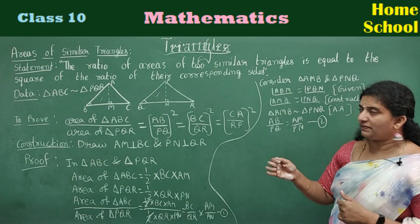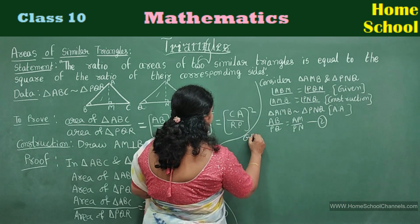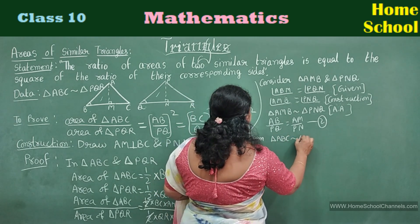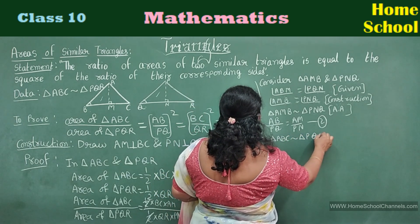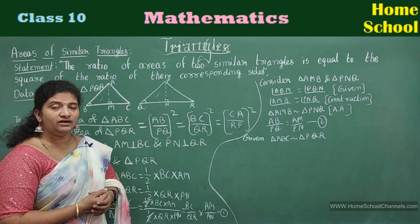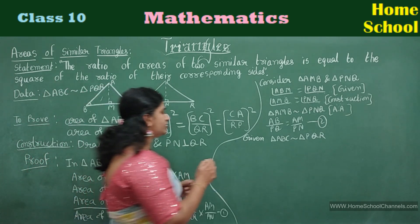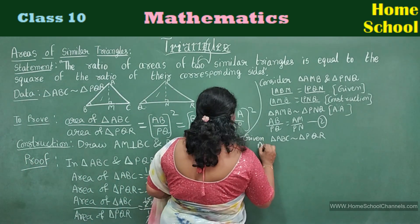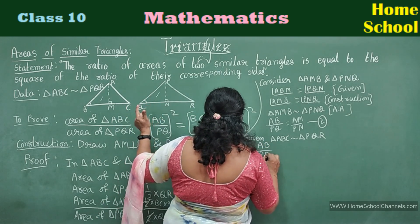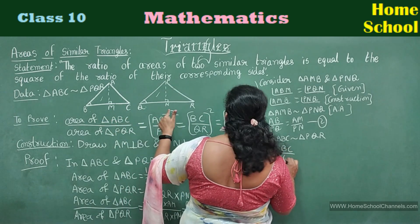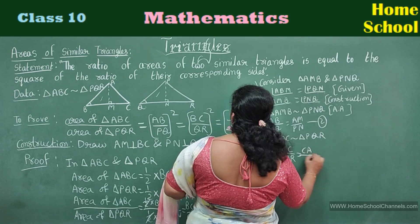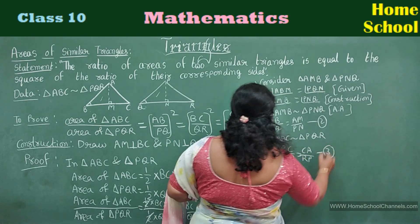Coming to the third step. Given: triangle ABC is similar to triangle PQR. If they are similar, the corresponding ratios are in proportion. Write: AB by PQ is equal to BC by QR is equal to CA by RP. Mark this as the third equation.